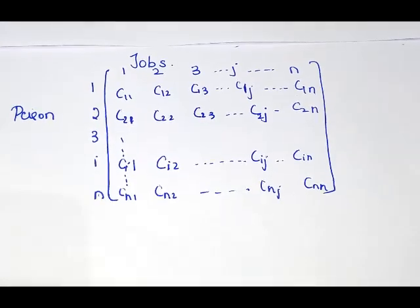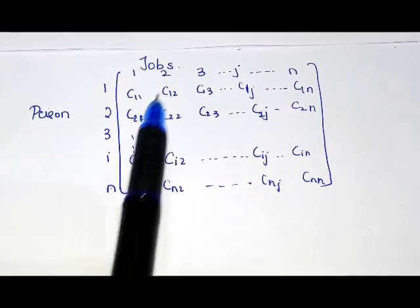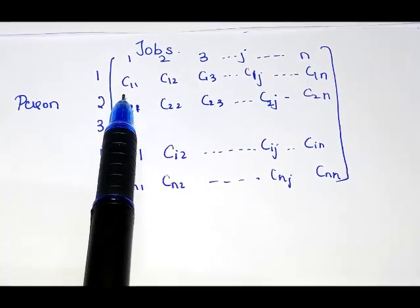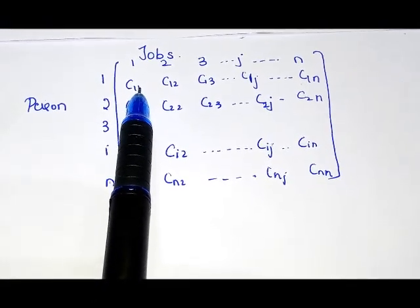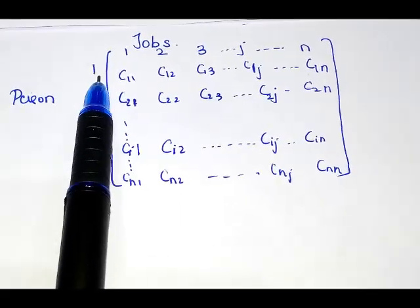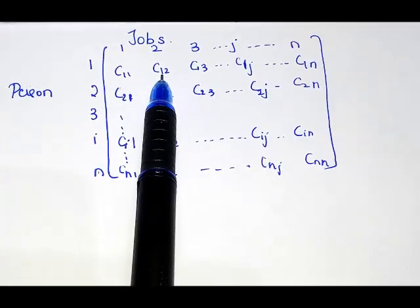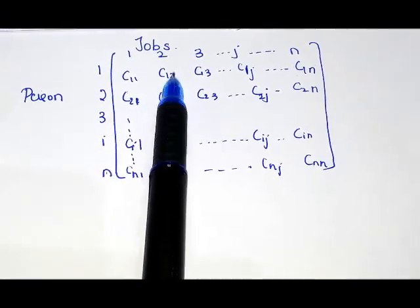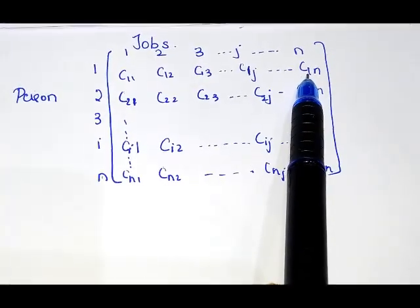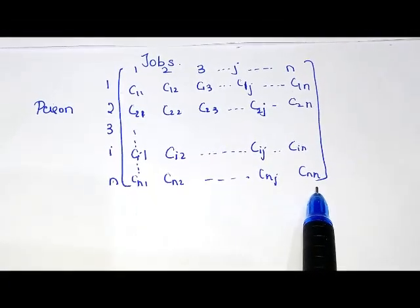Assignment problems are represented in a square matrix where different persons perform different jobs, and the C values are the respective costs involved when a particular job is handled by a particular person. For example, C11 is the cost when the first person performs the first job, C12 is when the first person performs the second job, and it goes on till the first person performing the N-th job. Likewise, we have N persons and N jobs to be performed.